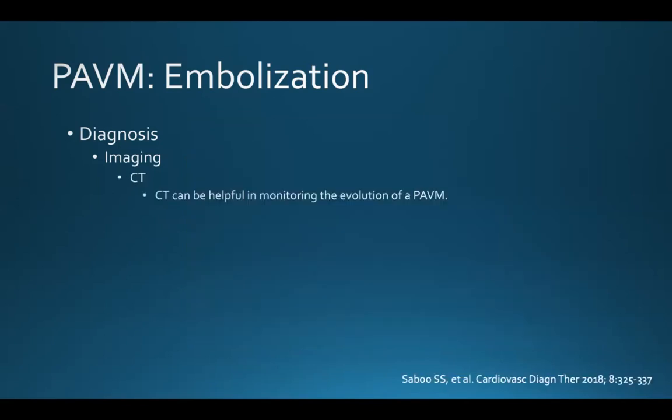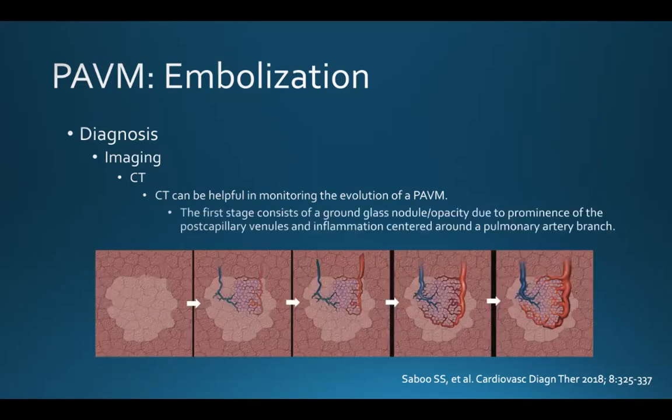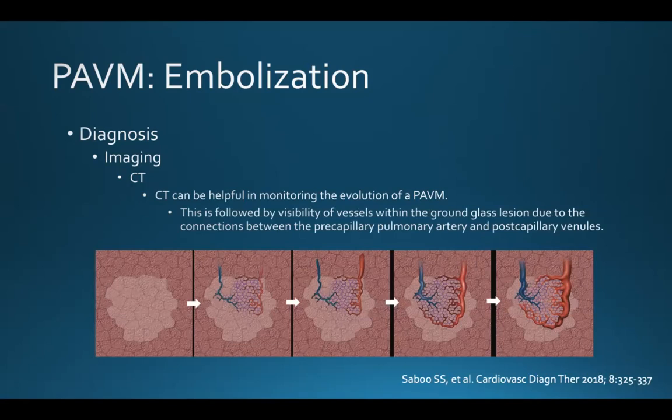CT can also be helpful in monitoring the evolution of a pulmonary AVM. The first stage consists of a ground glass nodule or opacity due to prominence of postcapillary venules and inflammation centered around a pulmonary artery branch. This is followed by visibility of vessels within the ground glass lesion due to connections between precapillary pulmonary arteries and postcapillary venules. In the third stage, there's AVM formation with an aneurysmal connection between the feeding artery and draining vein, with disappearance of the ground glass lesion.